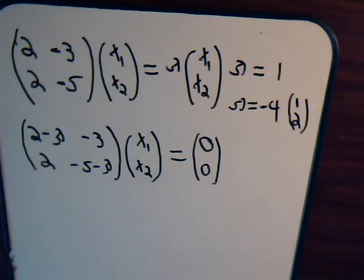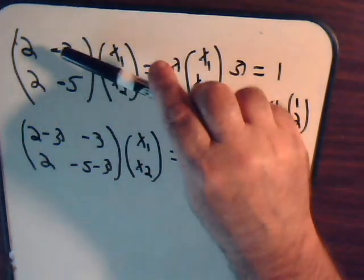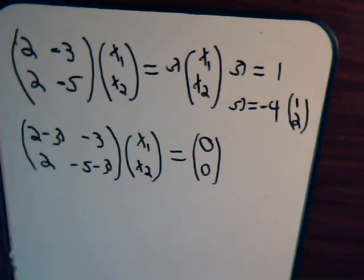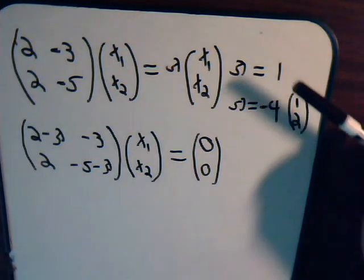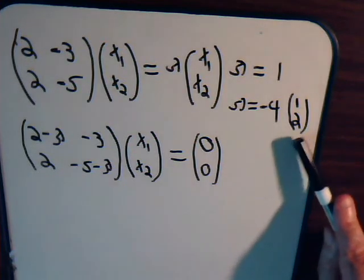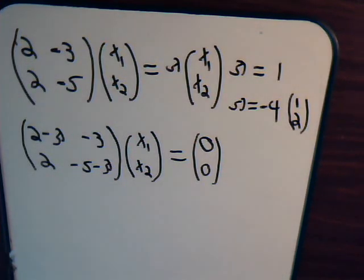This is video 18 from Digito-University. We are picking up where we left off in the previous video where we were working with a matrix and wanted to diagonalize it. The first thing we had to do was find the eigenvalues and corresponding eigenvectors. We found two eigenvalues: 1 and negative 4, and we determined the eigenvector corresponding to one of those eigenvalues.